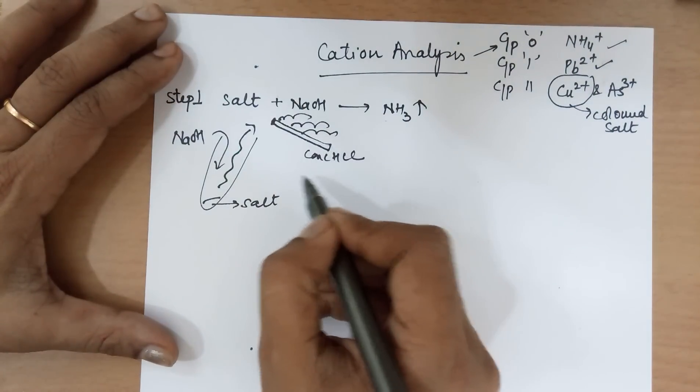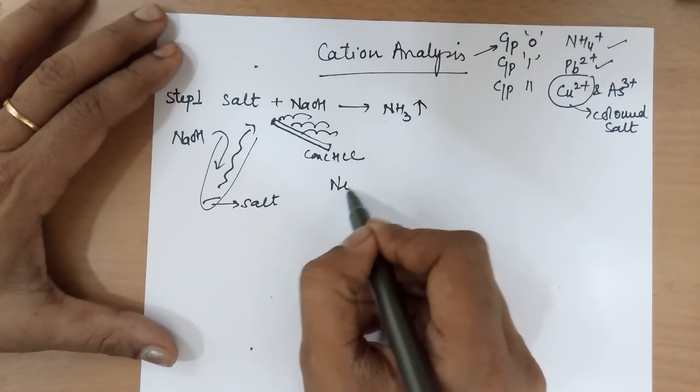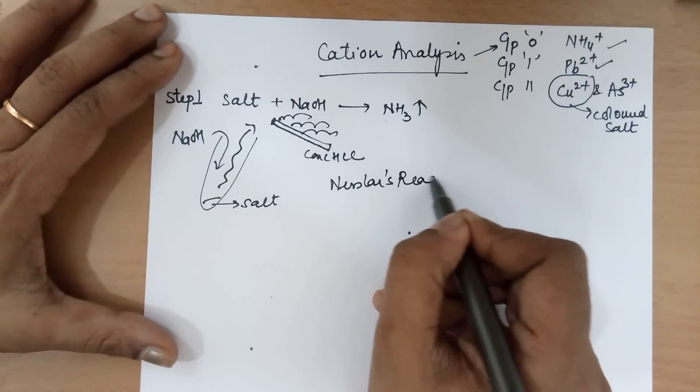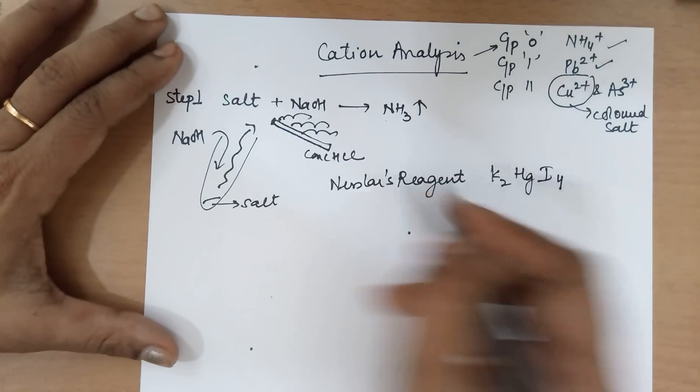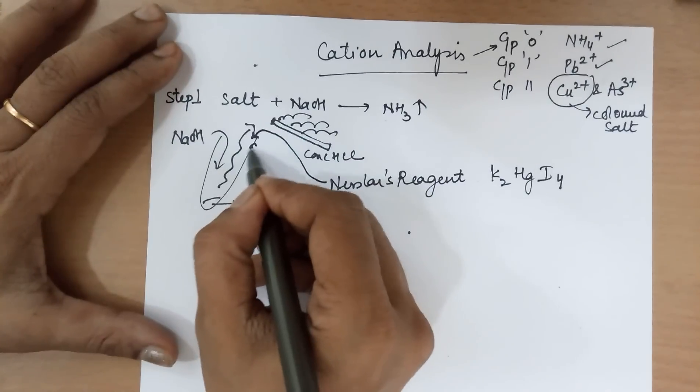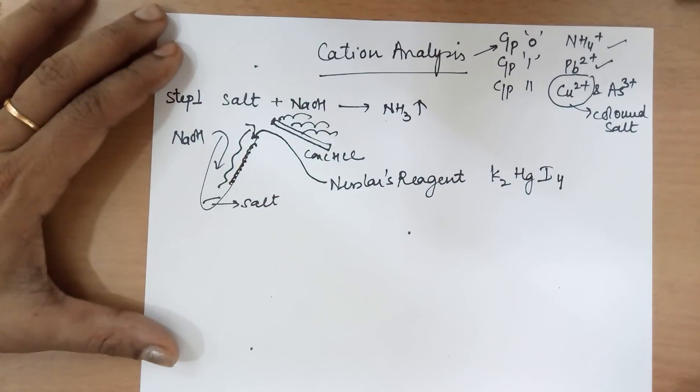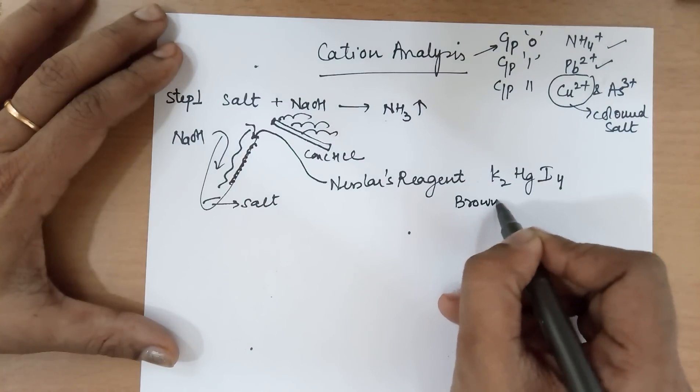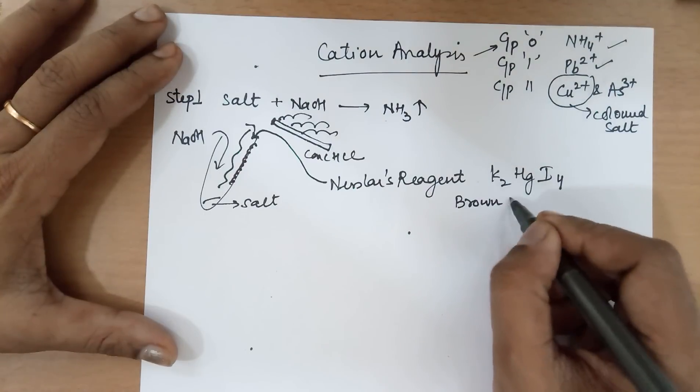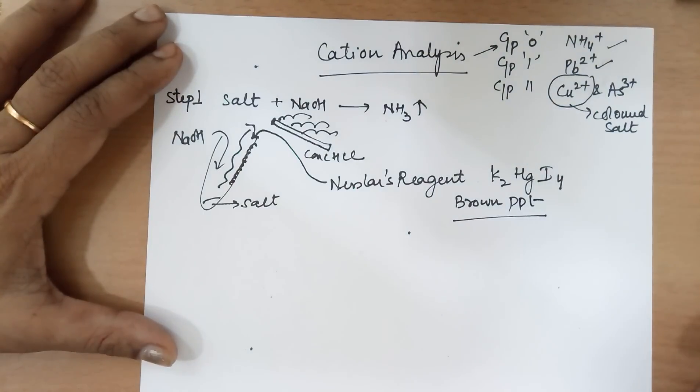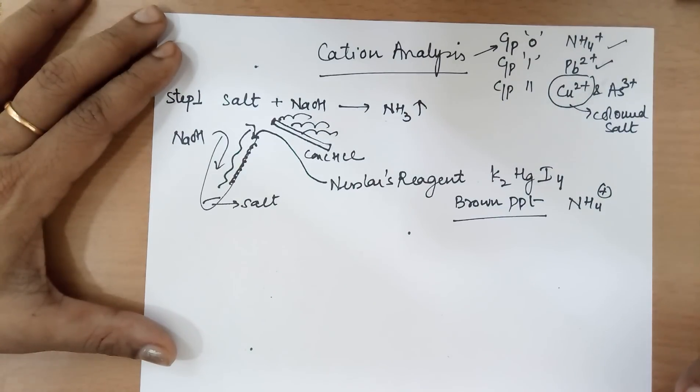The other way of testing it is, you add to this test tube Nessler's reagent. This reagent is K2HgI4. If you add the Nessler's reagent, you get brown colored precipitate. That is, a brown coloration in the test tube on the sides of the wall. You get a brown PPT formation, confirms ammonium ion. At times, after some time, if the gas escapes, the brown PPT is also not visible. Hence, as soon as you get the brown PPT, get it confirmed with your teacher.